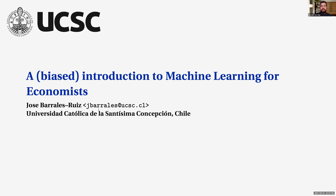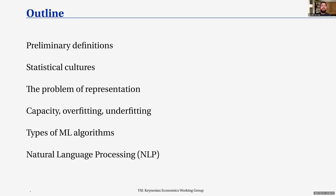What I want to show you is some preliminary definitions, then discuss some statistical cultures, which is quite important. If your only training is econometrics, you come to machine learning with your mind structured in a way that is different from the machine learning literature. Then I want to discuss problems of representation, data capacity, overfitting, underfitting, types of machine learning algorithms, and finally something I like a lot — natural language processing.